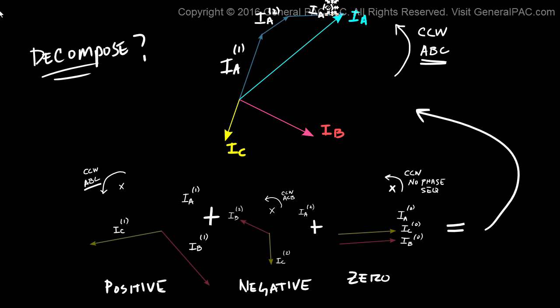Now let's do it with I_B. So we take our I_B positive sequence component and place it there. Now we take our I_B negative sequence component and add it to the positive sequence component. And we get that.